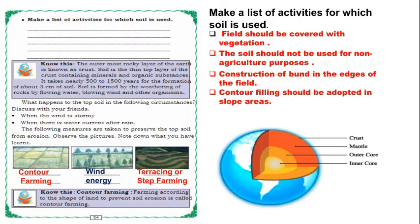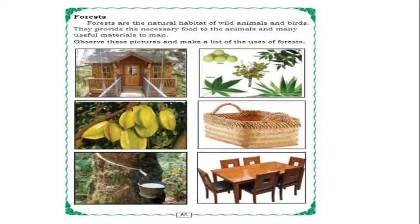Some measures are taken to prevent soil erosion. The following measures help preserve the top soil from erosion. In the picture you can see we can prevent soil erosion by various farming methods in agriculture — contour farming, wind barriers, and terracing or step farming. Farming according to the shape of land prevents soil erosion and is called contour farming.